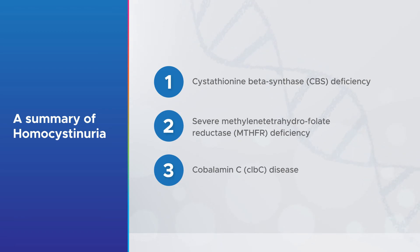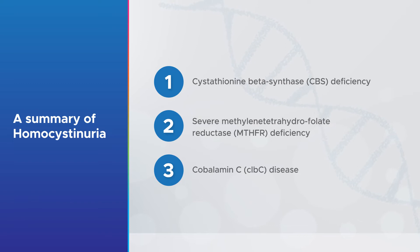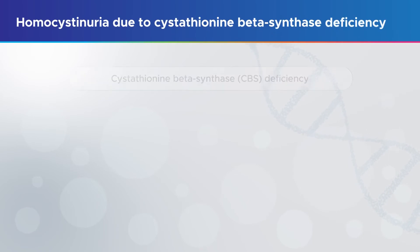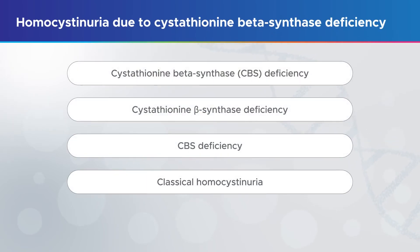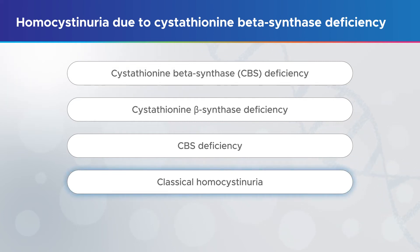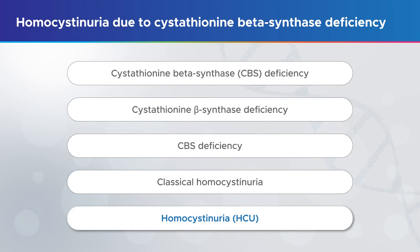We'll now briefly talk about the three most common forms, starting with homocystinuria due to cystathionine beta-synthase deficiency. This is the most common form of homocystinuria and, although it has lots of different names, it's often referred to as classical homocystinuria or just homocystinuria.